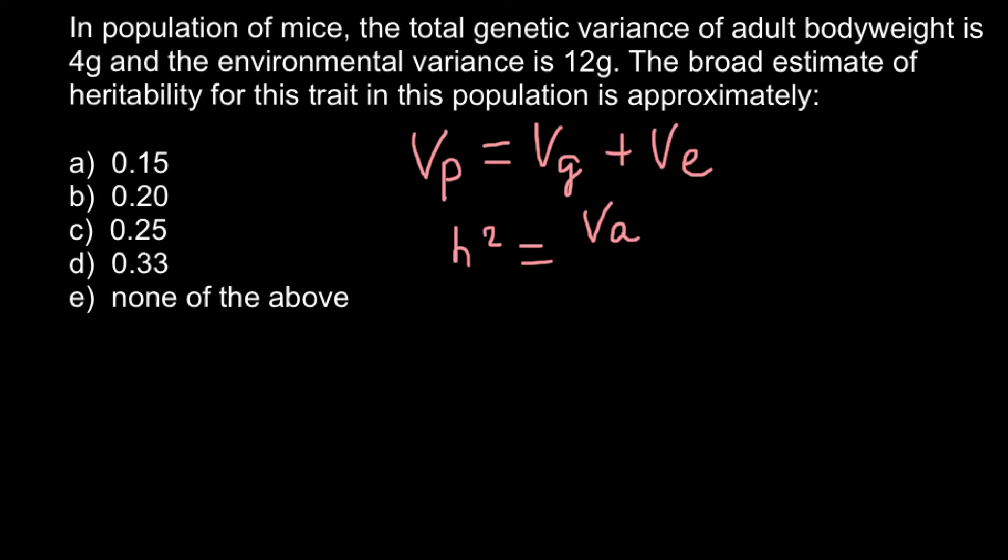The second formula, or third formula, would be broad sense heritability. We use H² (capital H squared), and here on the top we are going to get variance due to genetics divided by total phenotypic variance.